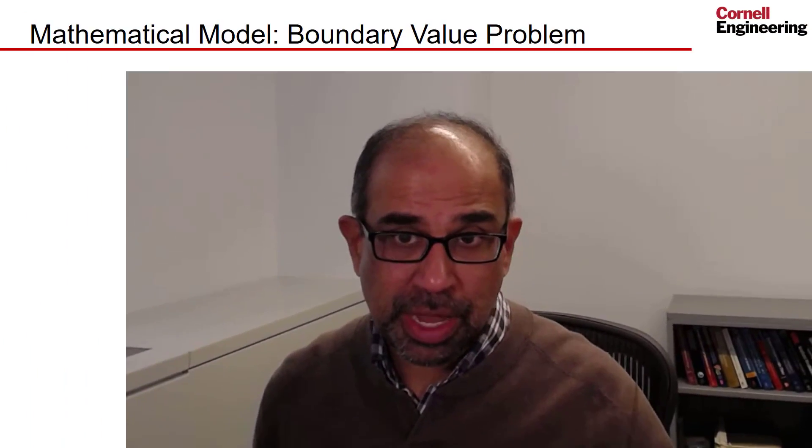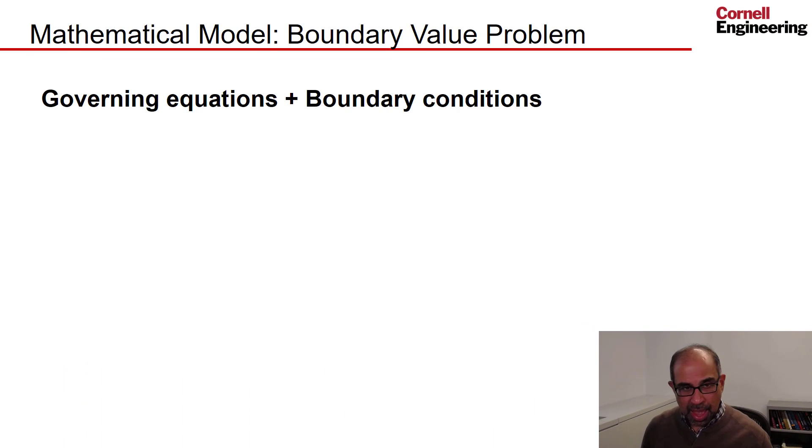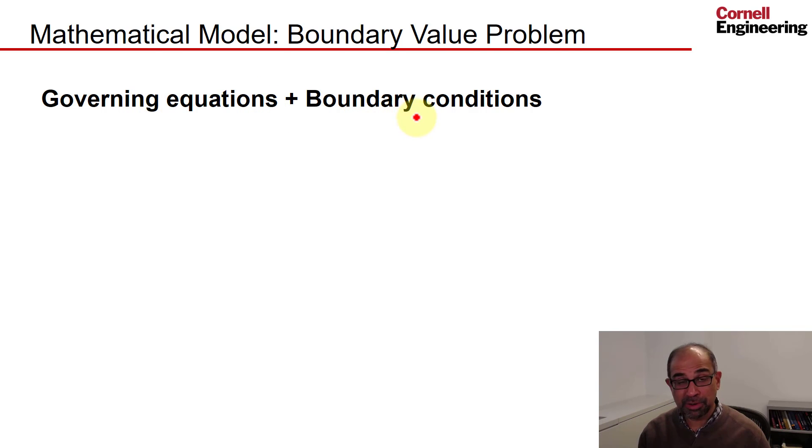Let's think about the mathematical model we need to solve for this convection problem. It turns out to be a boundary value problem, similar to the conduction problem, except that the boundary value problem for convection is much more complicated. The boundary value problem consists of governing equations defined in a domain and boundary conditions defined at the edges of the domain.